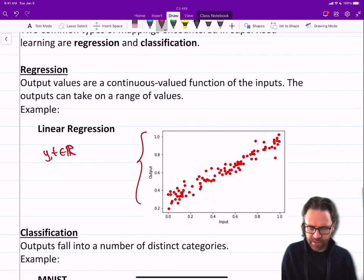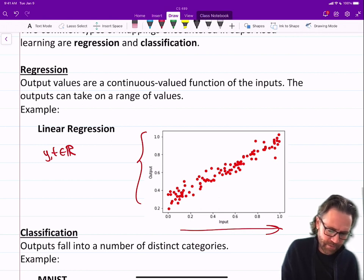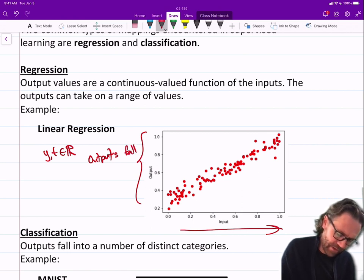And you can see here, in this dataset, we have a whole bunch of inputs on a spectrum, and our outputs are also on a spectrum. So outputs fall in a range of values.